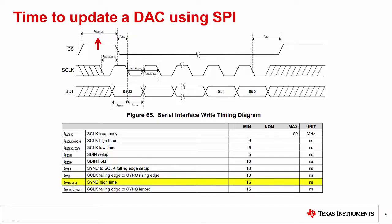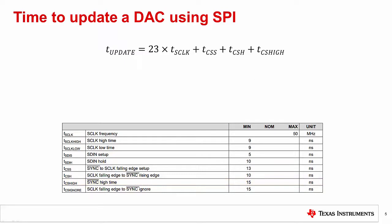Finally, there is the chip select high timing requirement. This is the minimum time the chip select can be held high before the next SPI transaction begins. These different timing requirements can be summed as shown in this equation to determine the minimum time to update the DAC register.